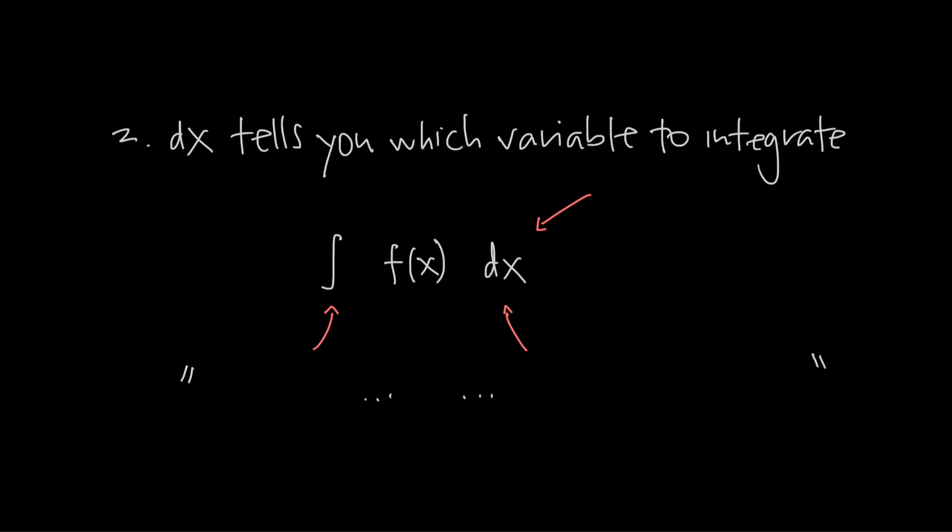Answer number two, the dx tells you which variable to integrate. If it's a dx, you're supposed to integrate with respect to x. If you had a dt instead, then you'd integrate with respect to t. In other words, the integral symbol tells you to integrate the function and the dx tells you to do so with respect to the variable x. That's why the variable in the integrand usually matches the variable in the dx or dt or d anything.